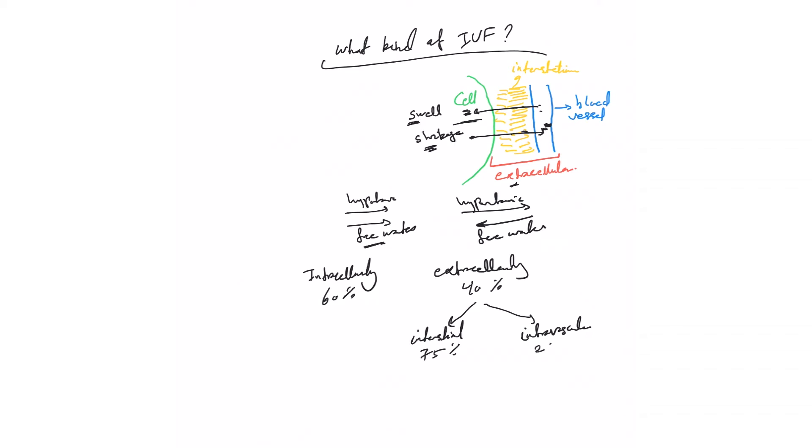Let's take a few examples. First example: D5W. As we said, it's an isotonic solution, but as soon as we infuse it, the blood sugar is absorbed and it becomes like free water. So 1000 cc of D5W will follow: 600 cc intracellularly (60%) and 400 cc extracellularly. Then the 400 cc: 300 cc will go into the interstitium and 100 cc (25%) will go intravascularly.